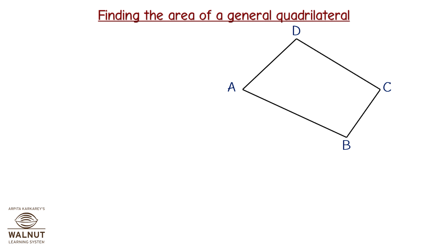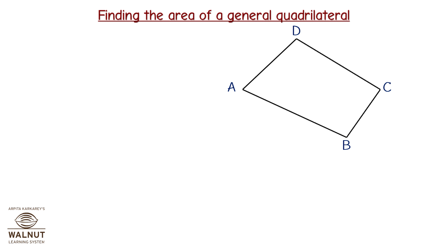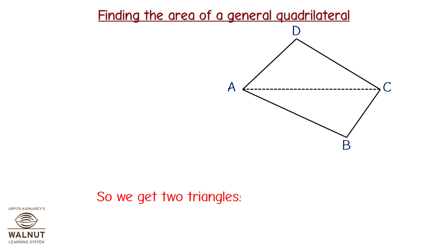Finding the area of a general quadrilateral. This is quadrilateral ABCD. By drawing a diagonal, we divide the quadrilateral into two triangles. Let's draw the diagonal AC. So we get two triangles: triangle ADC and triangle ABC.